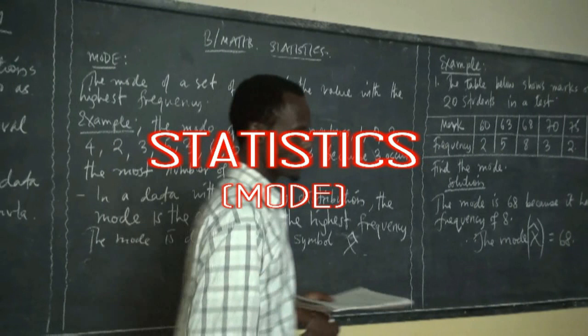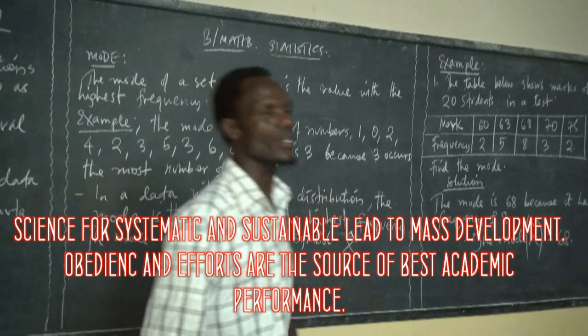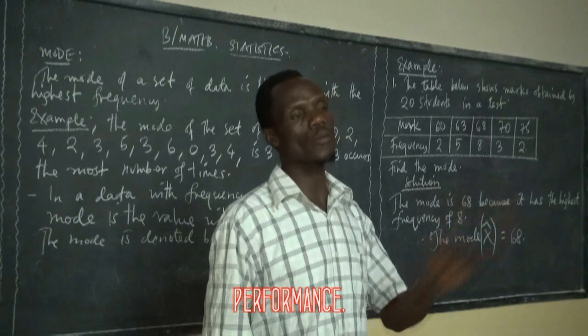We discussed much about statistics, and we are still doing it, so now we talk about mode. The mode of a set of data is the value with the highest frequency. In the data, the value with the highest frequency, we call it mode.